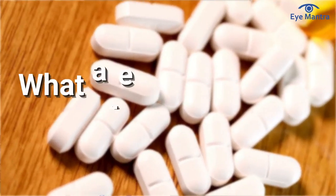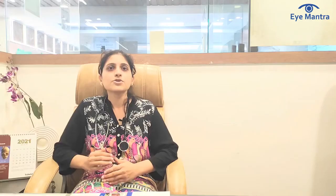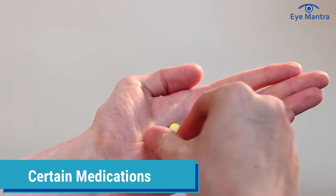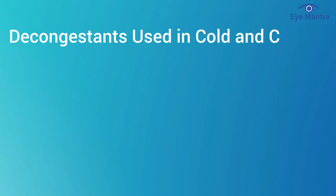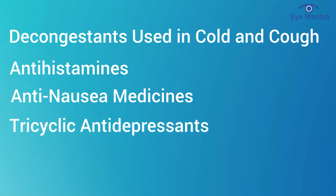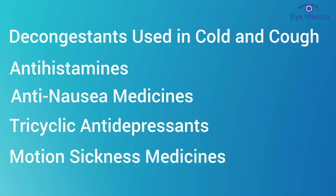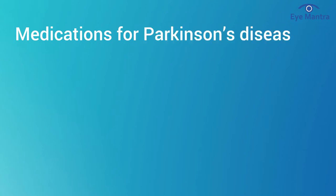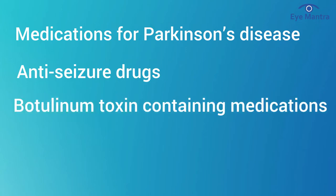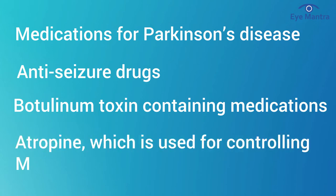What are the causes of pupil dilation? Your pupil can dilate due to many reasons. Certain medications — either prescribed or non-prescribed — can cause dilated pupils or affect the eye's overall ability to react to light. These may include decongestants used in cold and cough, antihistamines, anti-nausea medications, tricyclic antidepressants, motion sickness medicines, medications for Parkinson's disease, anti-seizure drugs, botulinum toxin containing medications including Botox, and atropine, which is used for controlling myopia and other medical purposes.